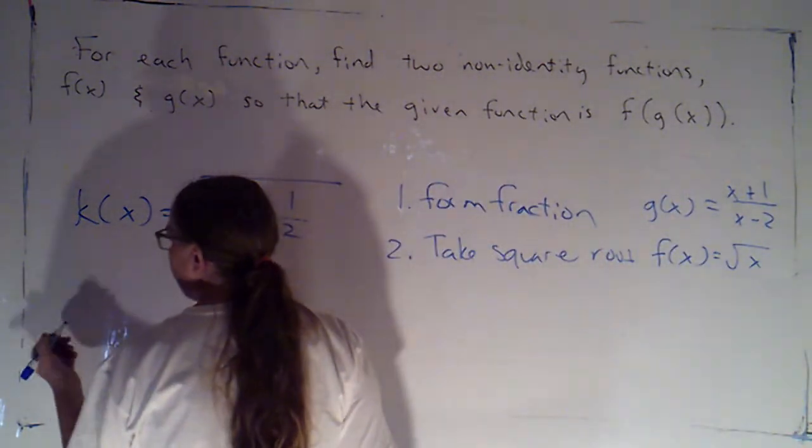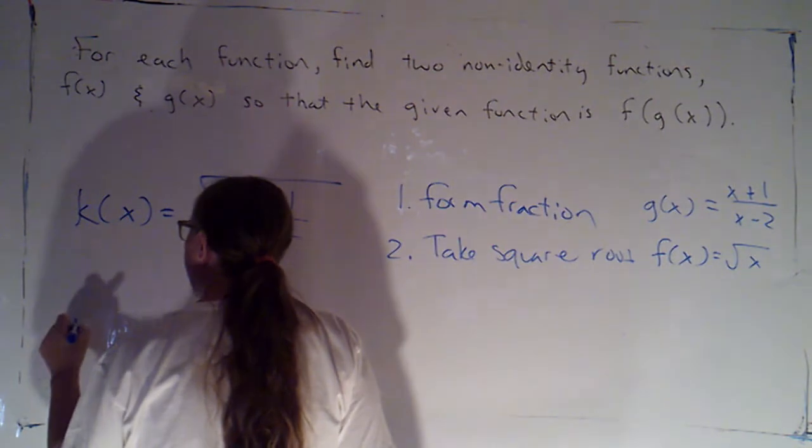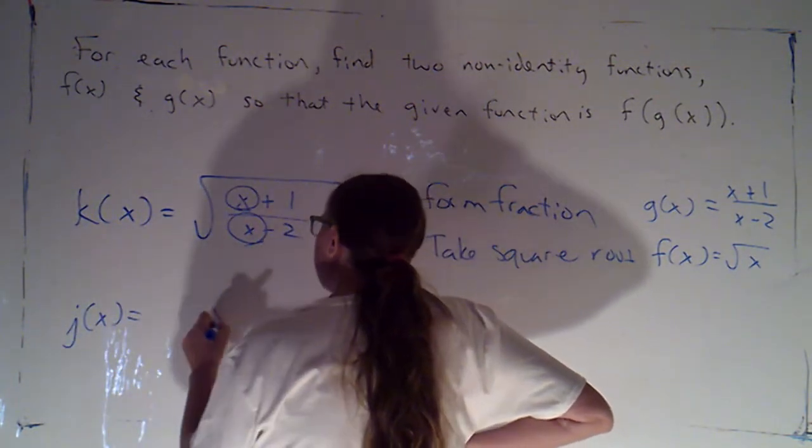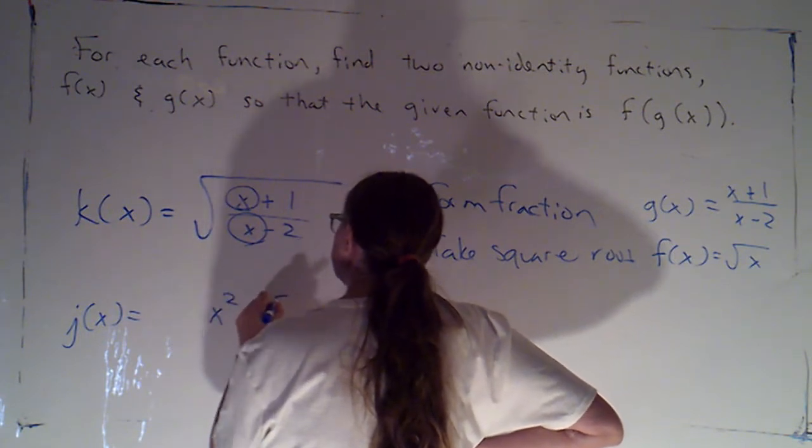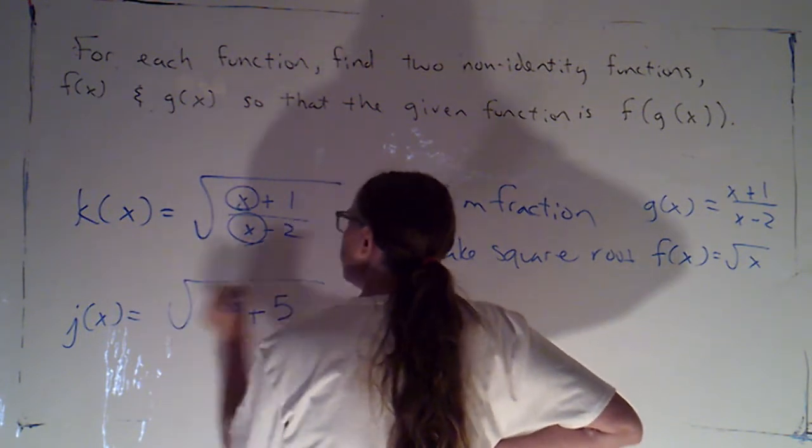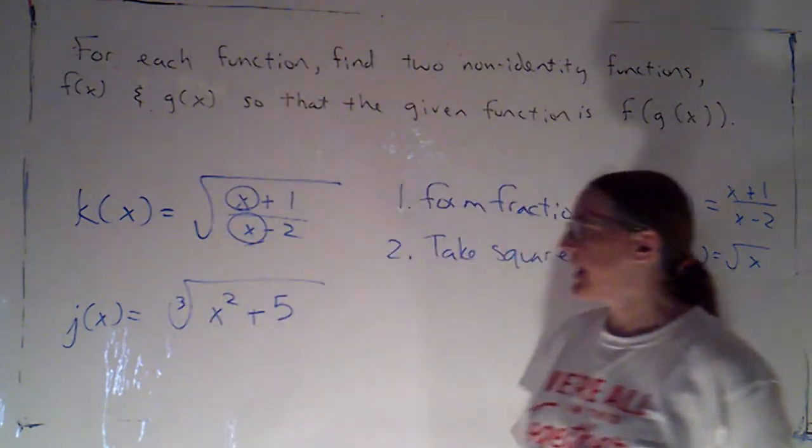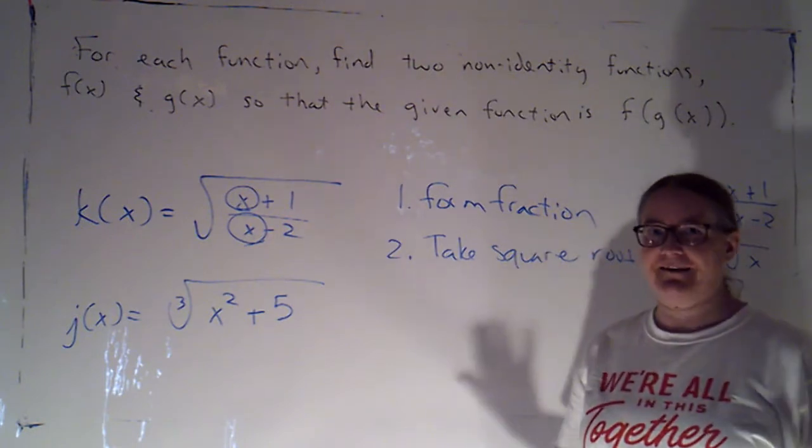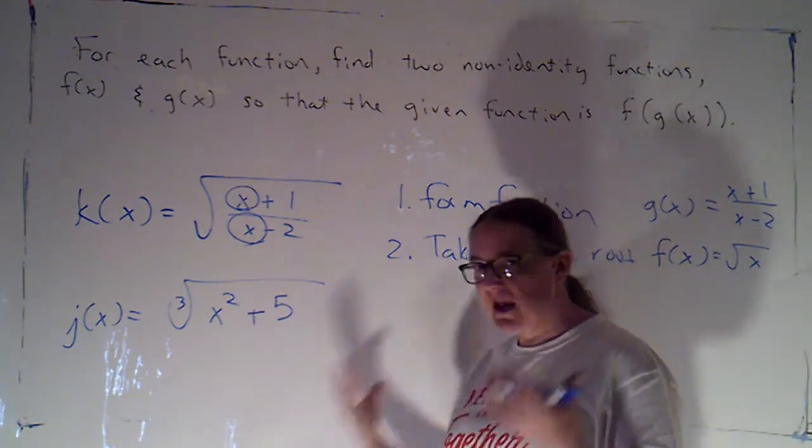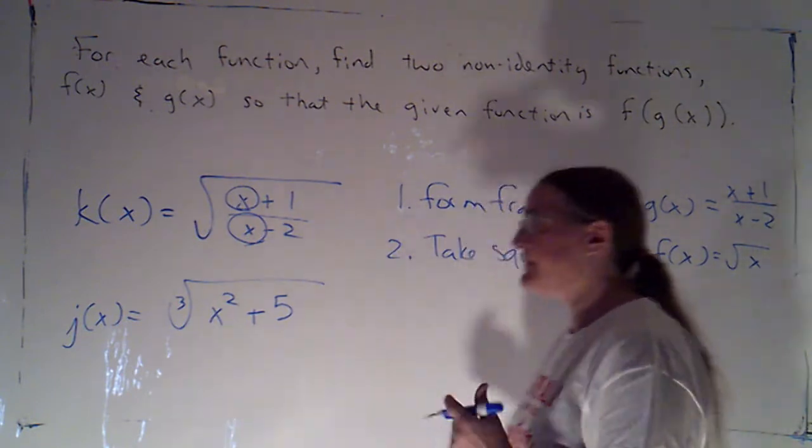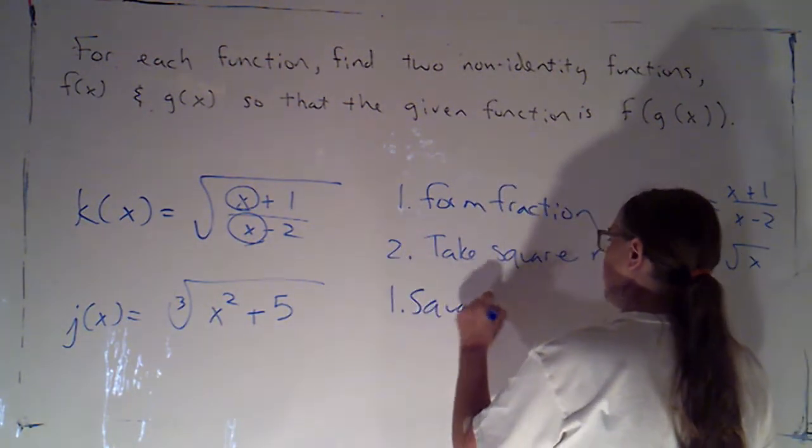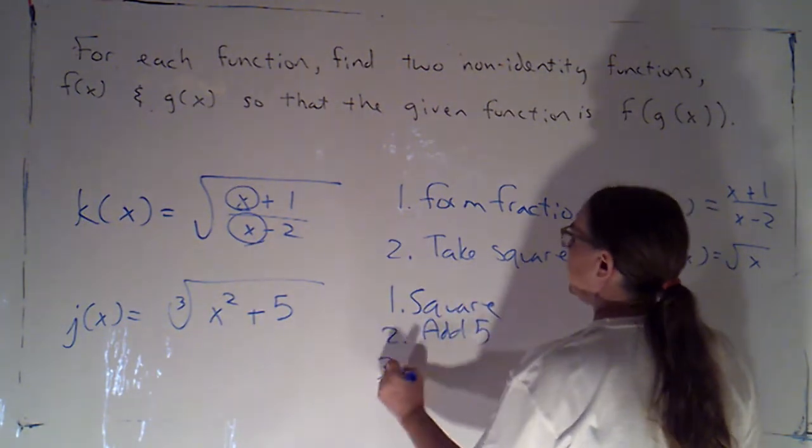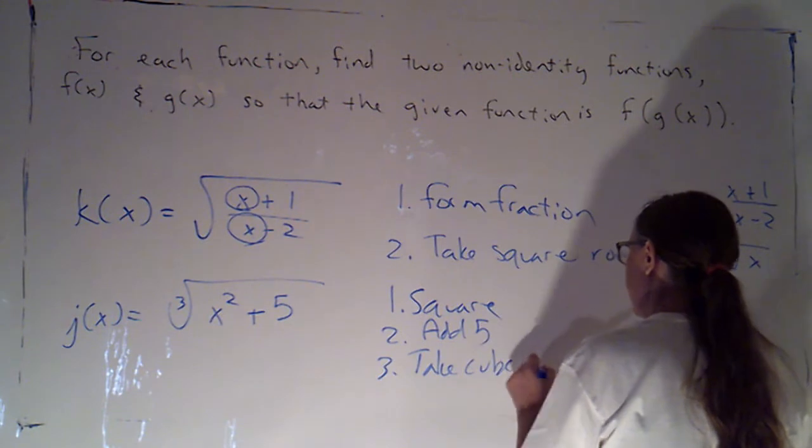Let's do one more example together. Let's suppose I had j of x equaling x squared plus 5 all under the cube root. If I look at this, I'm actually doing three things. I'm squaring x, then I'm adding 5, then I'm taking the cube root. Square, add 5, take the cube root.